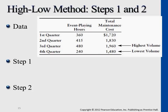Let's take a look at this example. You have different quarters of information on event playing hours for a DJ services company. They have been using certain equipment for certain hours and have to maintain certain instruments. The first quarter has 360 event playing hours and $1,720 in maintenance costs. The second quarter has 415 hours, the third quarter 480 hours with even more cost incurred, and the fourth quarter backed up to 240 hours with the least maintenance cost. The highest and lowest cost points are the third quarter and the fourth quarter.